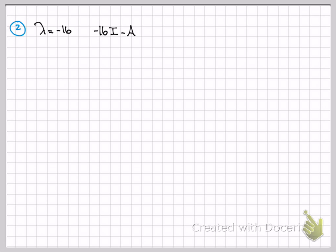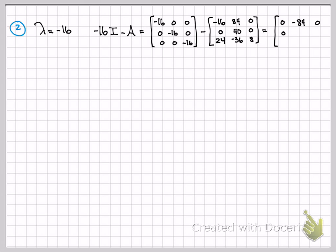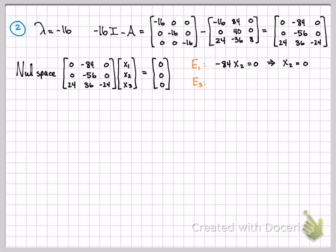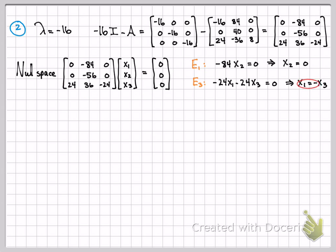For λ = -16, same procedure: negative 16 times the identity matrix minus A equals zero. Computing that gives this matrix here, and I need to find the null space — find x1, x2, x3 such that this matrix operating on them gives the zero vector. By inspection: from equation one, x2 has to equal zero. From equation three, with x2 zero, x1 has to equal negative x3.